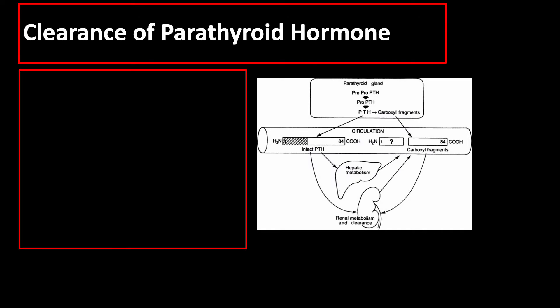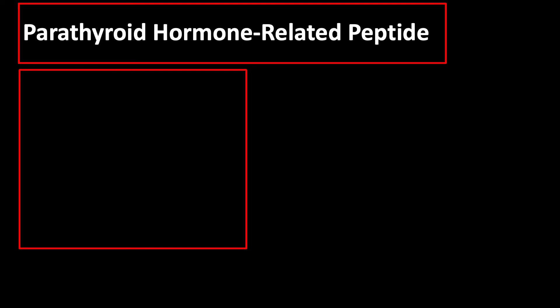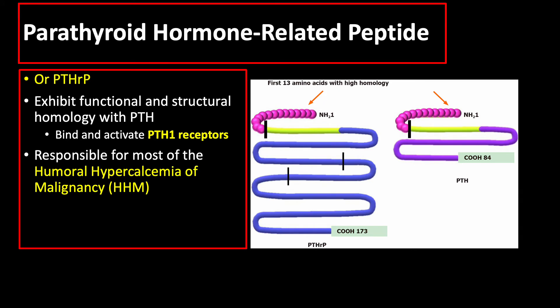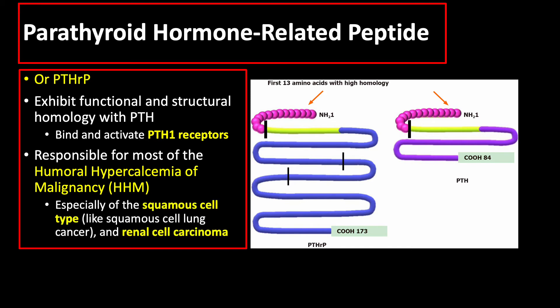Much of the proteolysis, metabolism, and clearance of parathyroid hormone occurs in the liver and the kidneys. There is another substance to mention, the parathyroid hormone-related peptide, or PTHRP, which exhibits functional and structural homology with parathyroid hormone. PTHRP also binds and activates parathyroid hormone receptors. Parathyroid hormone-related peptide is responsible for most of the humoral hypercalcemia of malignancy, especially of the squamous cell type like squamous cell lung cancer and renal cell carcinoma.